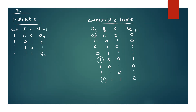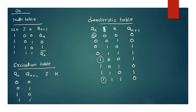Now let's do the JK excitation table. We have Qn, Qn+1, and J,K. For 0→0: J=0, K=don't care. For 0→1: J=1, K=don't care. For 1→0: J=don't care, K=1. For 1→1: J=don't care, K=0. If the output is fixed at 0 we call it don't care for K.